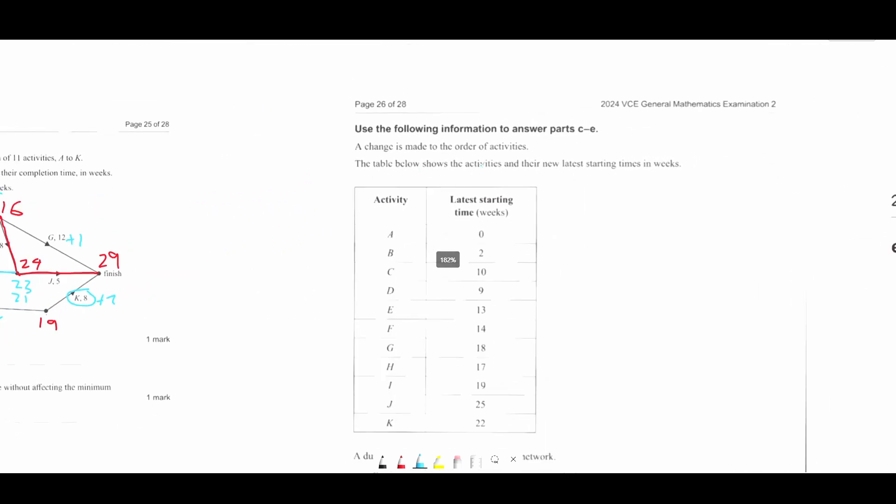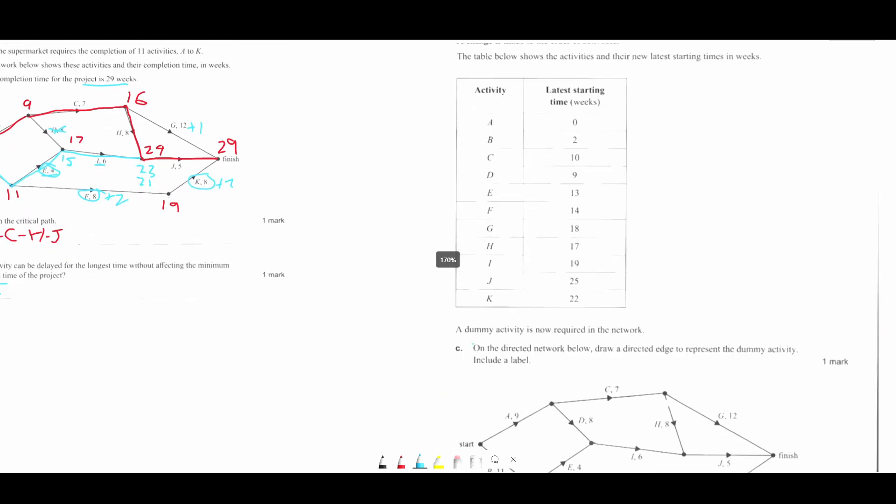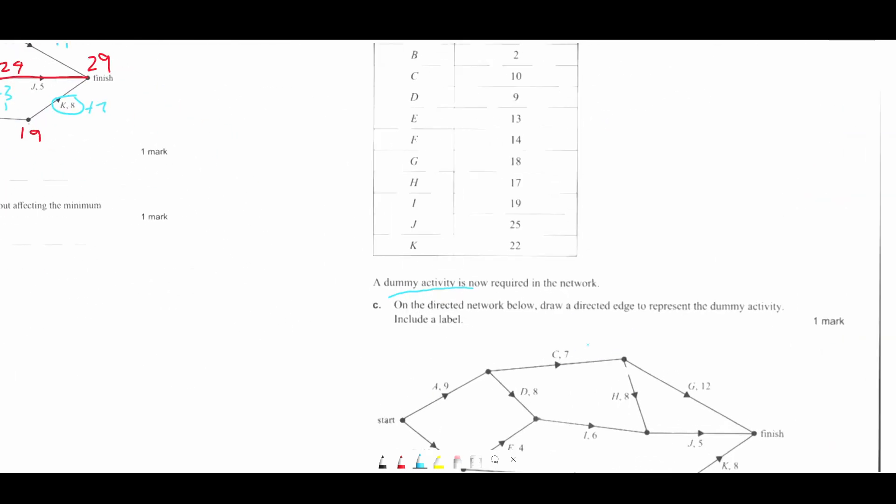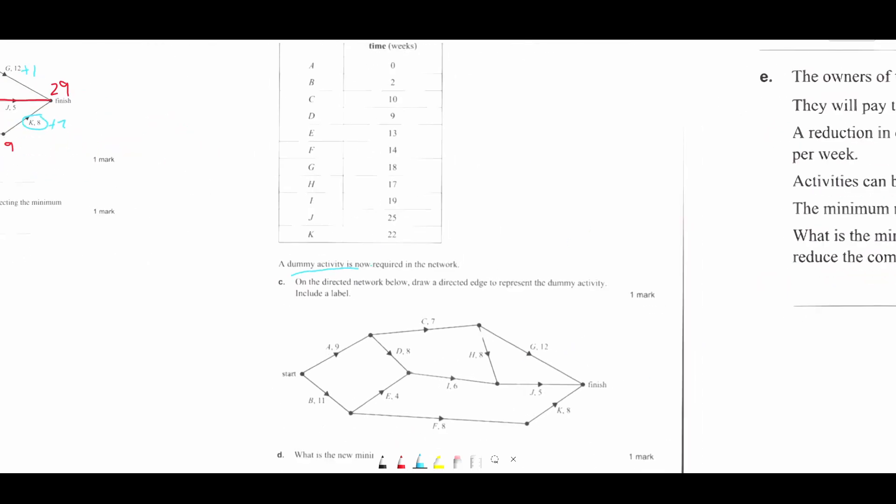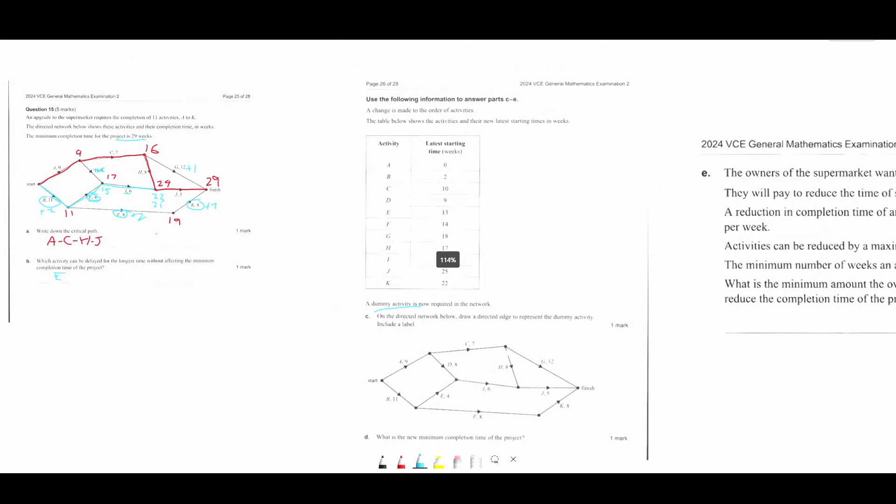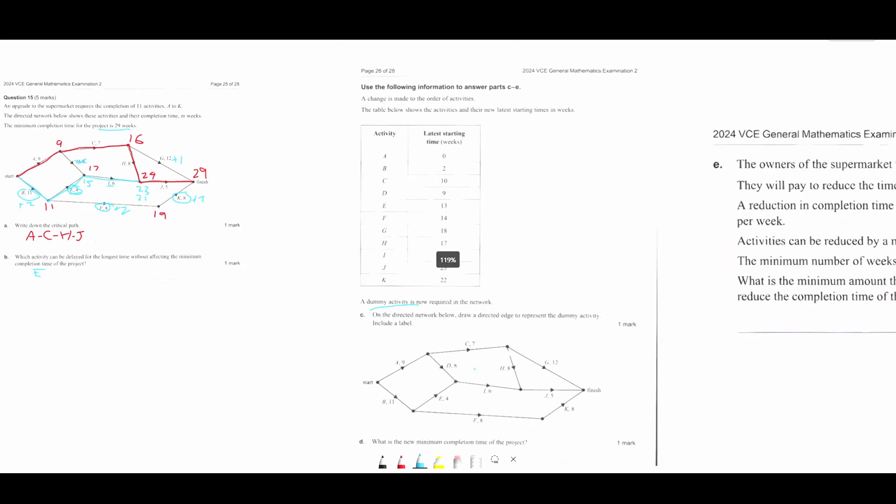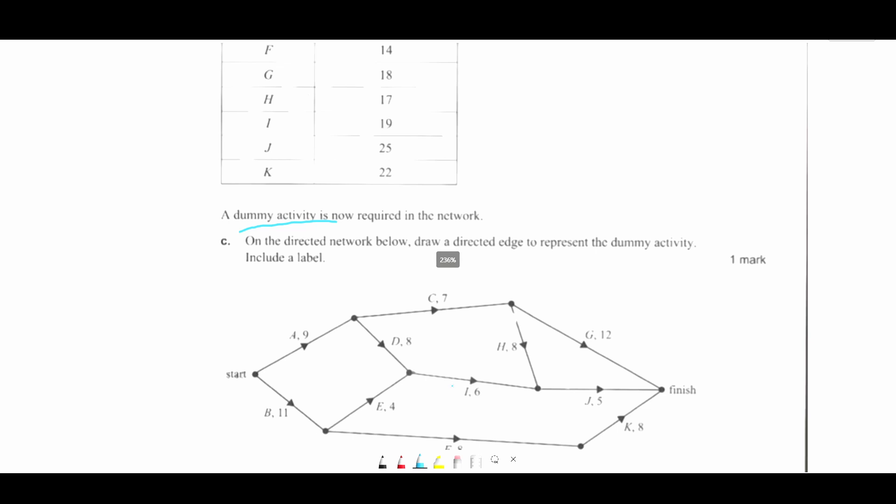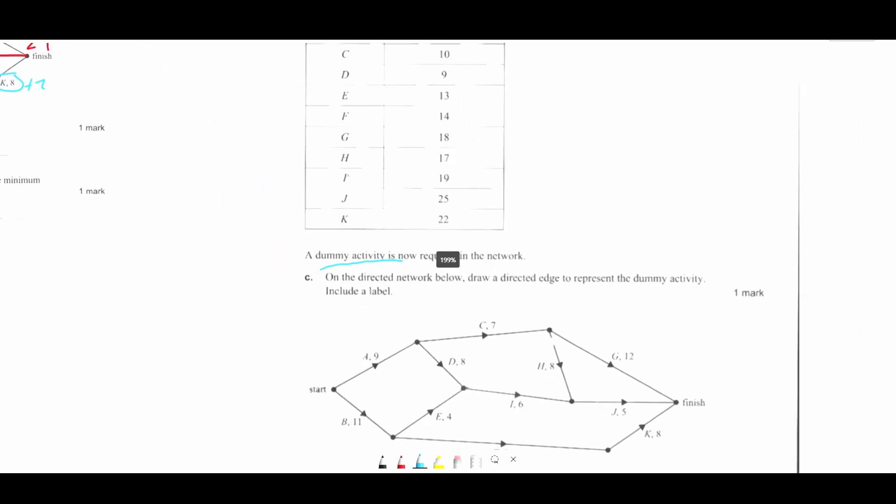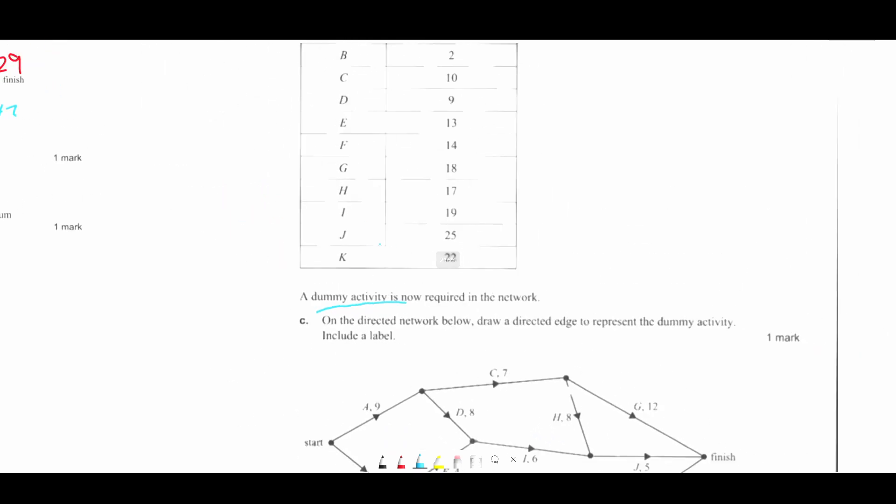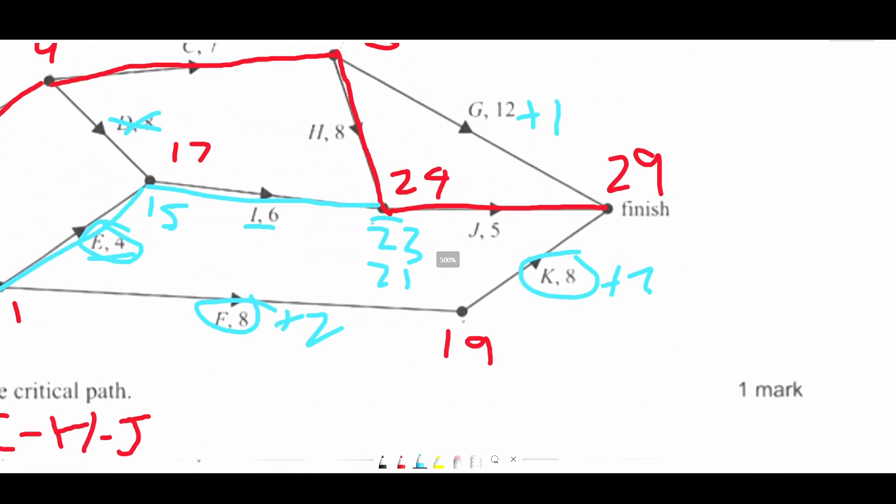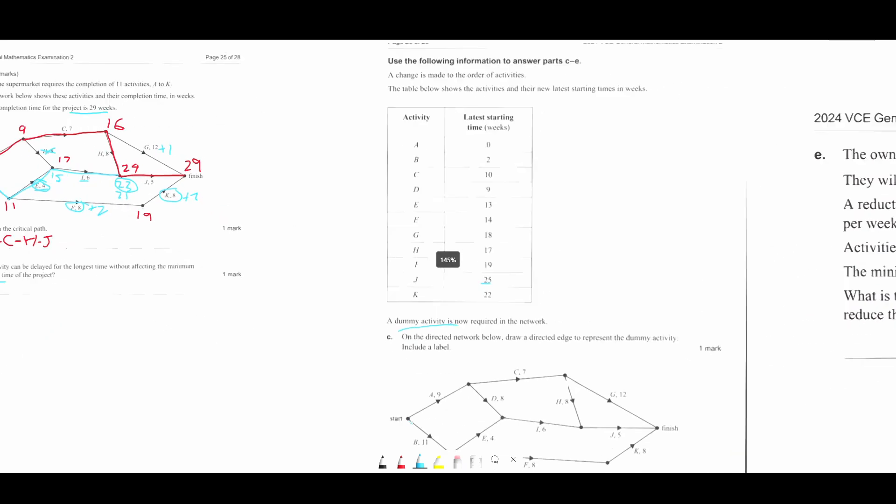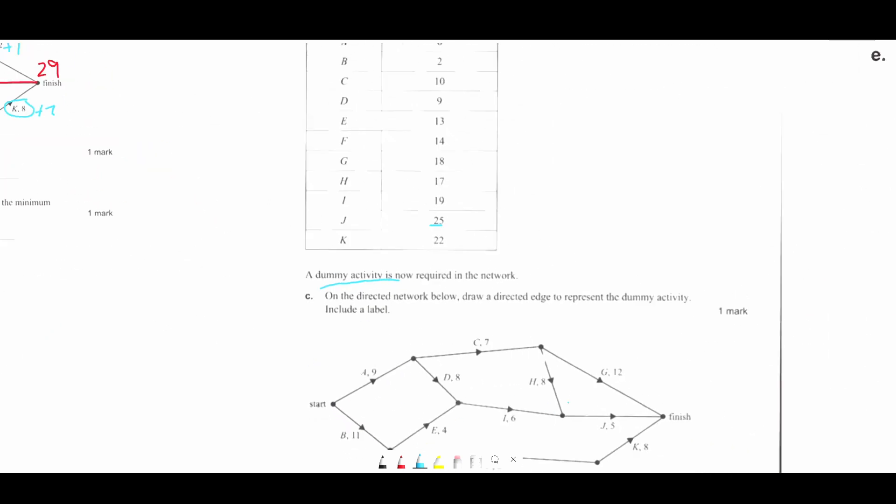A change is made to the order. A table below shows the activities and a new latest starting times. A dummy activity is required. Now we have to draw the dummy activity. So the project completion time probably would have changed then. Looking now, J is 25. I don't remember seeing 25 after J. Yeah, before it was 23. So there must have been a dummy activity being added here somewhere before J.